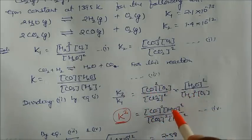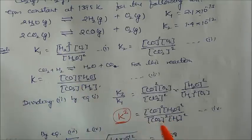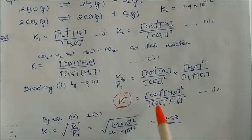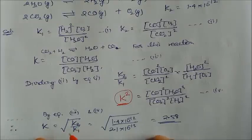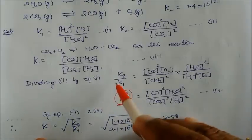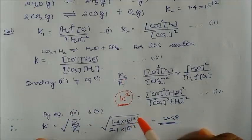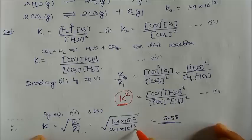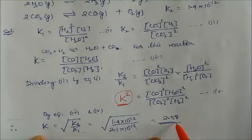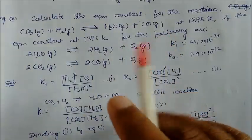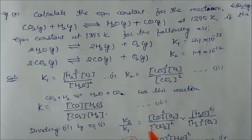The result of dividing K2 by K1 gives K², so K is the square root of K2/K1. Substituting values — 1.4×10⁻¹² divided by 2.1×10⁻¹³ — taking the square root gives the answer 2.58. These questions are not very difficult; this is the approach to solve them.